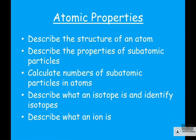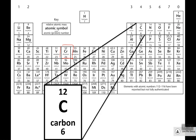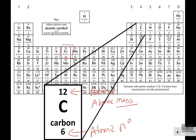Now let's look at how you calculate the number of subatomic particles in atoms. In physics you're not given a periodic table, but you may be given a snippet. In chemistry you do get one. Looking at the notation, we have two numbers: the bottom one is the atomic number, and the top one is the relative atomic mass. The easiest way to remember this is that the mass is the massive number — so 12 here is the atomic mass.